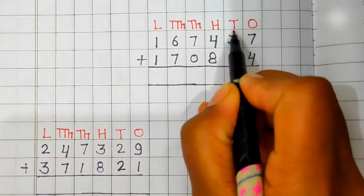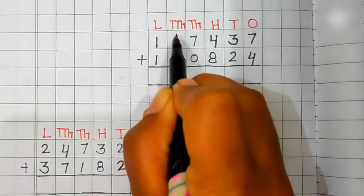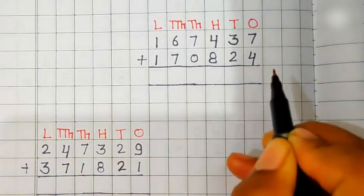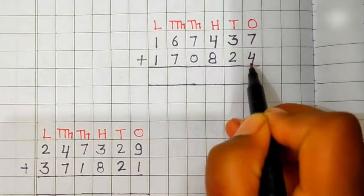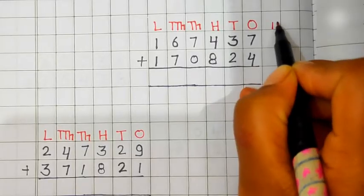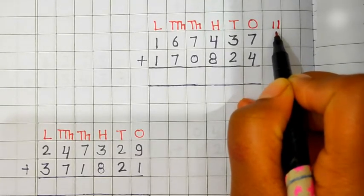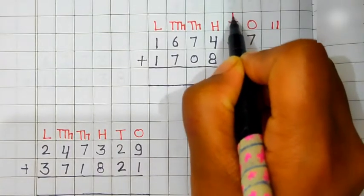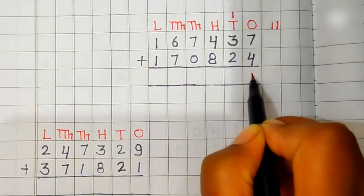1 place, 10 place, 100 place, 1000 place, 10,000 place and this is lakh place. Let's add ones first. 7 plus 4 is equal to 11. 11 is a two-digit number. We will carry 1 to the 10 place and 1 comes in the answer.